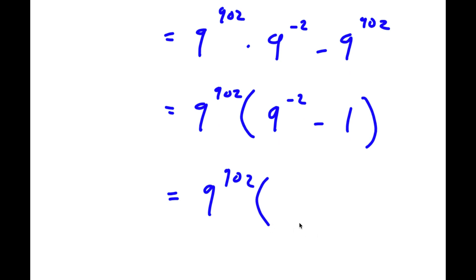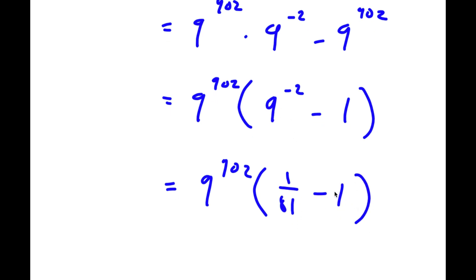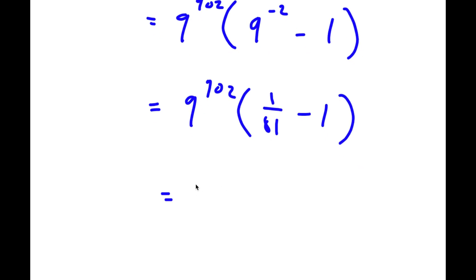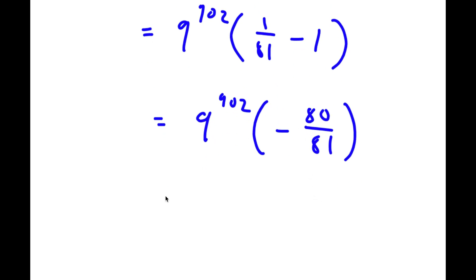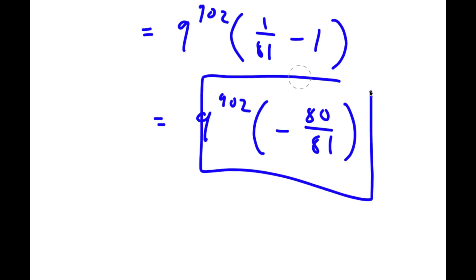Now, 9 to the power of negative 2 is the same as 1 over 81. So I have 9 to the power of 902 times the quantity 1 over 81 minus 1, which simplifies to 1 over 81 minus 81 over 81, giving negative 80 over 81. So this is equal to 9 to the power of 902 times negative 80 over 81. This is another way of writing the answer.